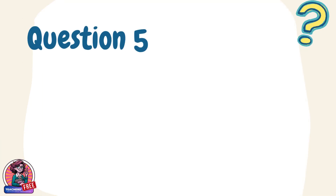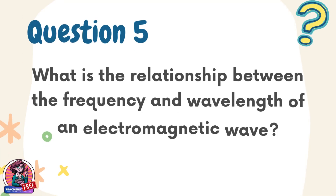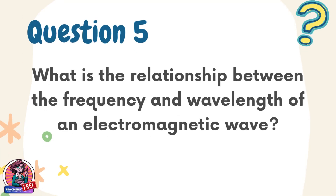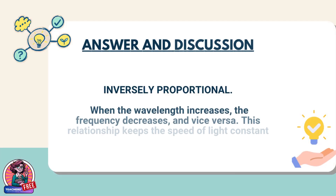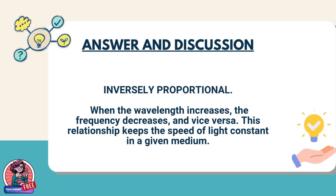Question 5. What is the relationship between the frequency and wavelength of an electromagnetic wave? Answer: inversely proportional. When the wavelength increases, the frequency decreases, and vice versa. This relationship keeps the speed of light constant in a given medium.